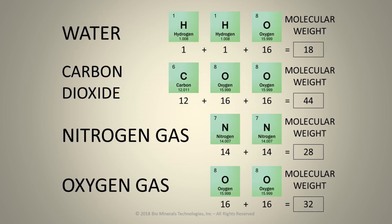Elements are simply combined to make molecules. Water — two hydrogen and one oxygen — has a molecular weight of 18. Carbon dioxide — one carbon and two oxygen molecules — has a molecular weight of 44. Nitrogen gas — two nitrogen elements — has a molecular weight of 32.